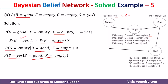Now we put in the values. P(battery = good) = 0.9, since P(battery = bad) = 0.1. P(fuel = empty) = 0.2. P(gauge = empty | battery = good, fuel = empty) = 0.8. For P(start = yes | battery = good, fuel = empty), since P(start = no) is given as 0.8 for this condition, P(start = yes) = 1 minus 0.8 = 0.2. Multiplying all these values together gives 0.0288.